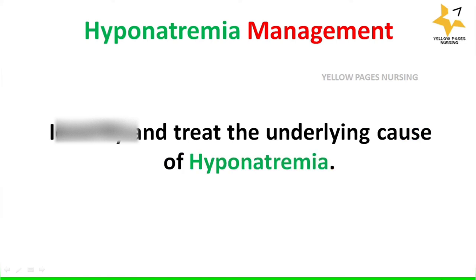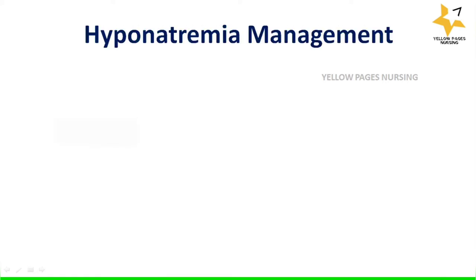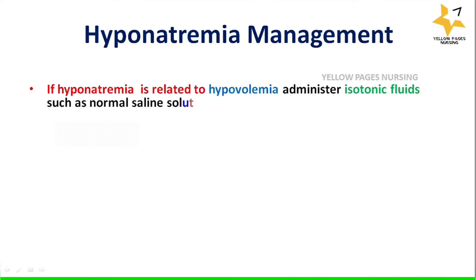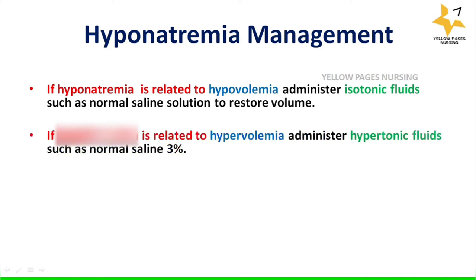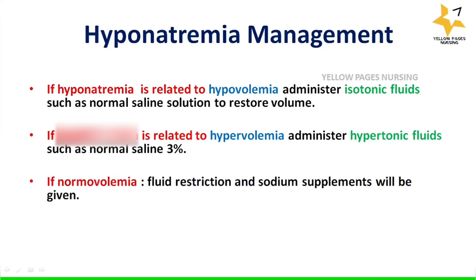How do we manage hyponatremia? It depends on identifying and treating the underlying cause, such as vomiting or diarrhea. When hyponatremia is related to hypovolemia, administration of isotonic fluids such as normal saline solution helps restore the volume. If related to hypervolemia, hypotonic fluids such as 3% normal saline are administered. In cases of normal volemia, fluid restriction and sodium supplements will be given.